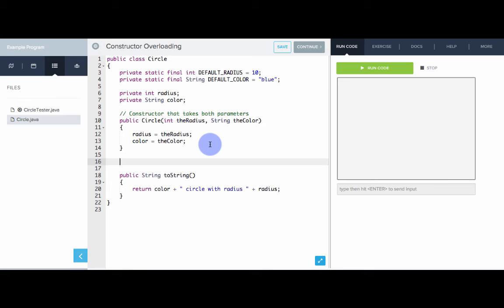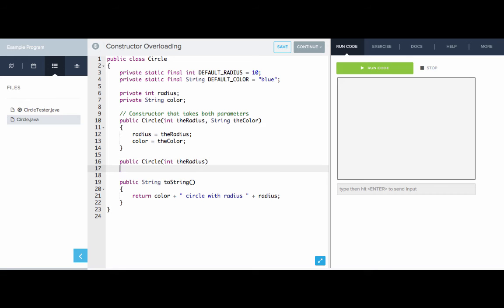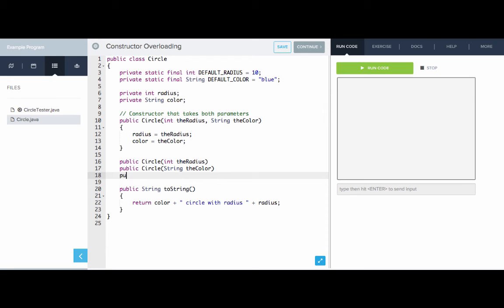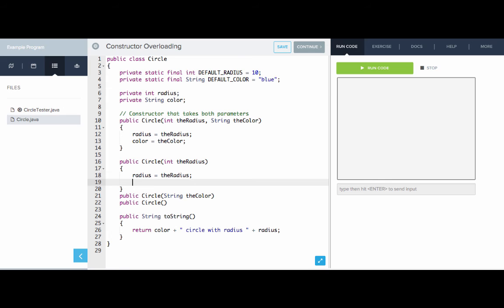So, we can actually override the constructor. Let's make three more. We'll make a circle constructor that only takes the radius. We'll make a circle constructor that only takes the color. And we'll make a no-argument circle constructor. Here, we want to set the radius to the radius provided. And we'll set the color to the default color, which, in this case, is blue.